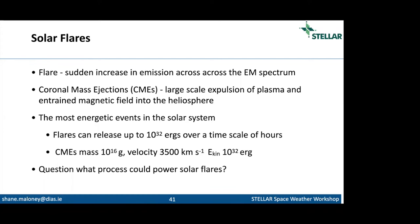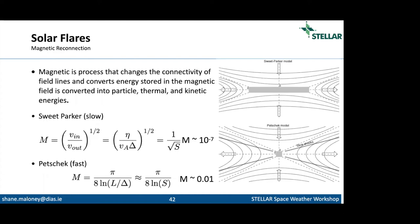So far I've said the magnetic field powers solar flares. The question is: we have a magnetic field with non-potential energy stored in it — how does this actually power a solar flare? That's where magnetic reconnection comes into play. Magnetic reconnection is at a high level simple to understand, but in any detailed mathematical or theoretical way it's extremely complicated. The basic idea is that magnetic reconnection is the process that changes the connectivity of field lines, allowing that non-potential energy to be converted into particle, thermal, and kinetic energies.